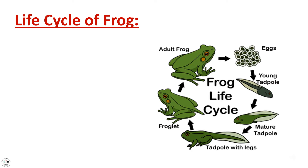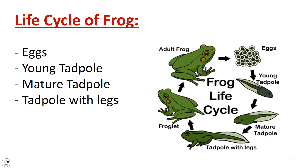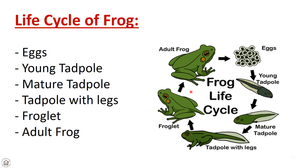Life cycle of a frog: as you can see, the life cycle of a frog begins with eggs, then a young tadpole, then a small tadpole, then a mature tadpole, then a tadpole with legs, then a froglet, and finally an adult frog.